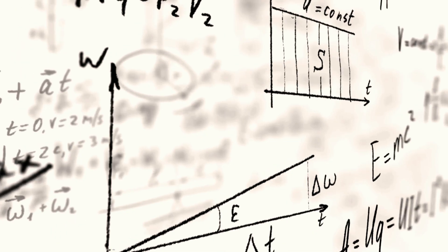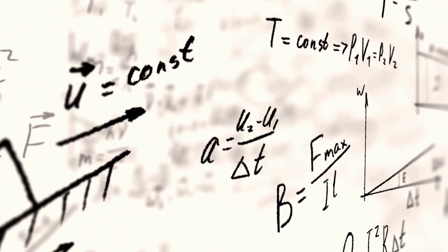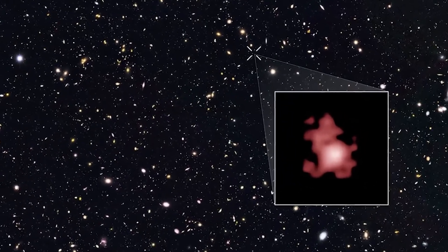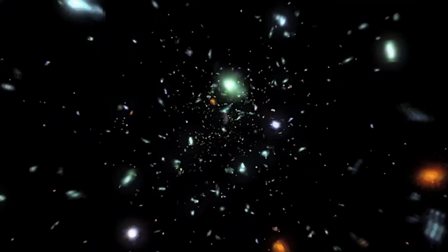In 1917, Einstein applied his general theory of relativity to the entire cosmos. His equations revealed something radical. The universe couldn't simply sit still. Space and time were dynamic, capable of stretching, curving, and expanding.